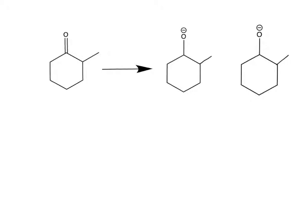We know that enolates are formed when a hydrogen is lost from an alpha carbon. We get two products when there are two different types of alpha carbons on an asymmetrical molecule. When the purple hydrogen leaves, we're left with our alkene here, and when the blue hydrogen leaves, our alkene is here.